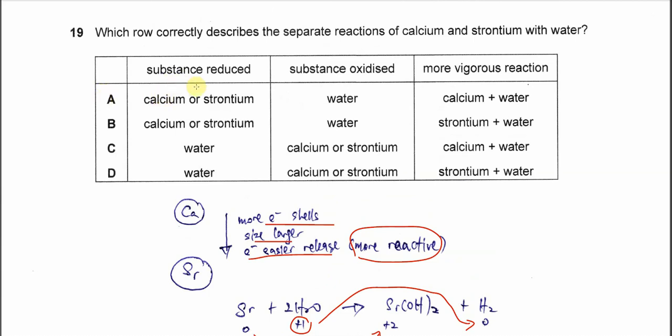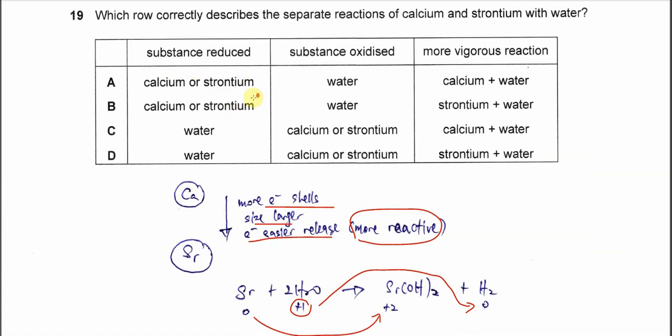Substance that gets reduced - this one of course is not calcium or strontium, so A and B are out. Because the substance that's reduced must be water, as I told you just now.